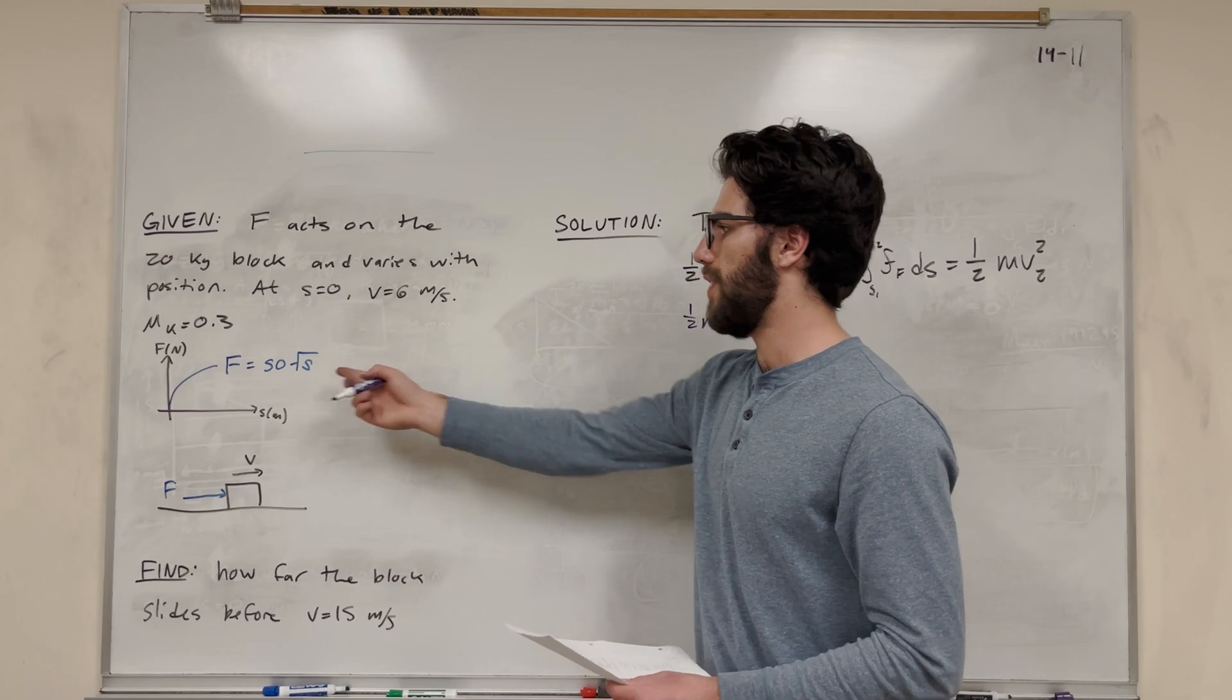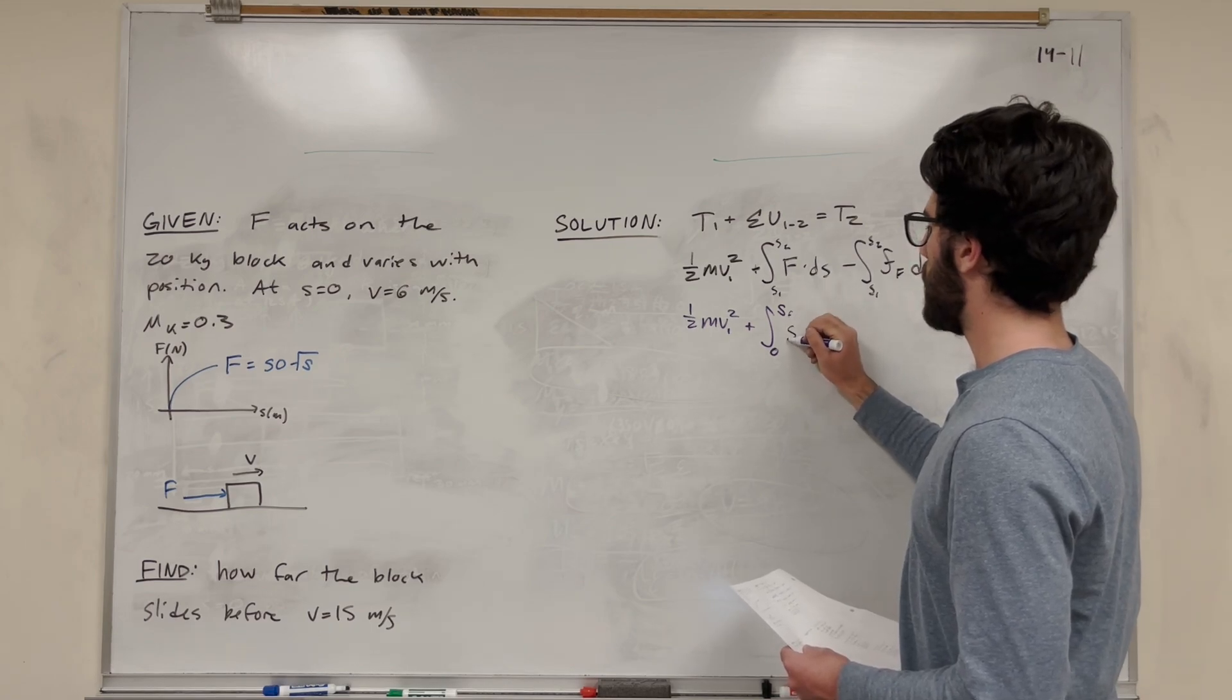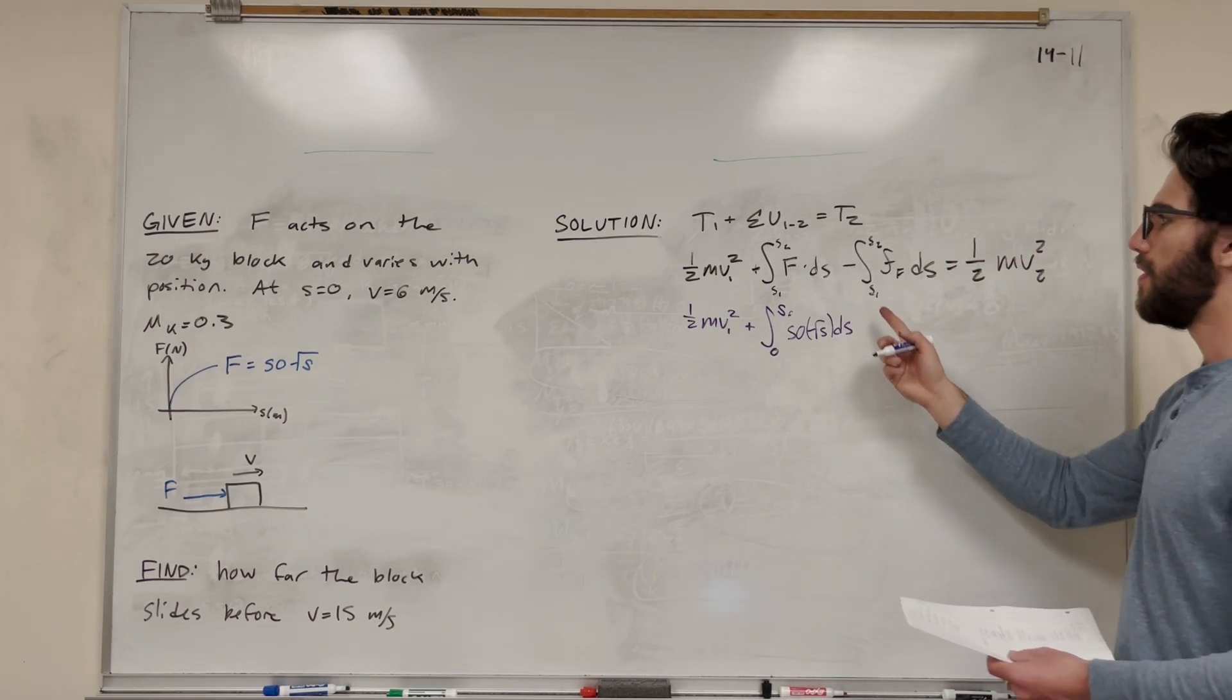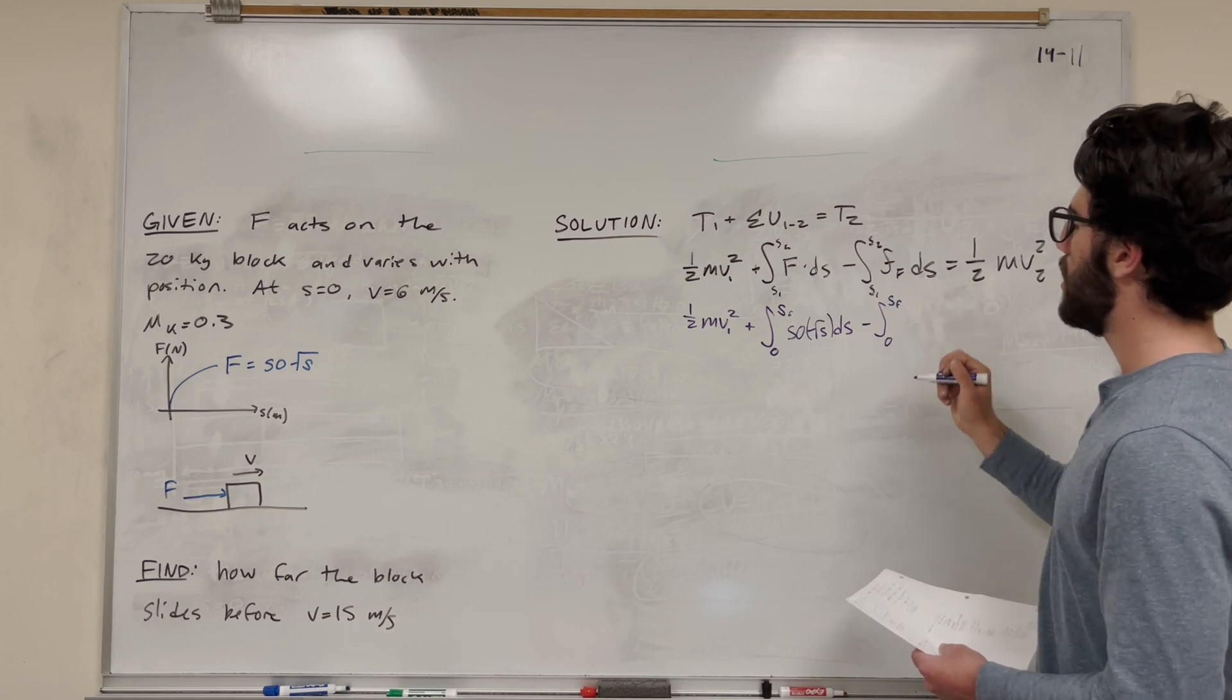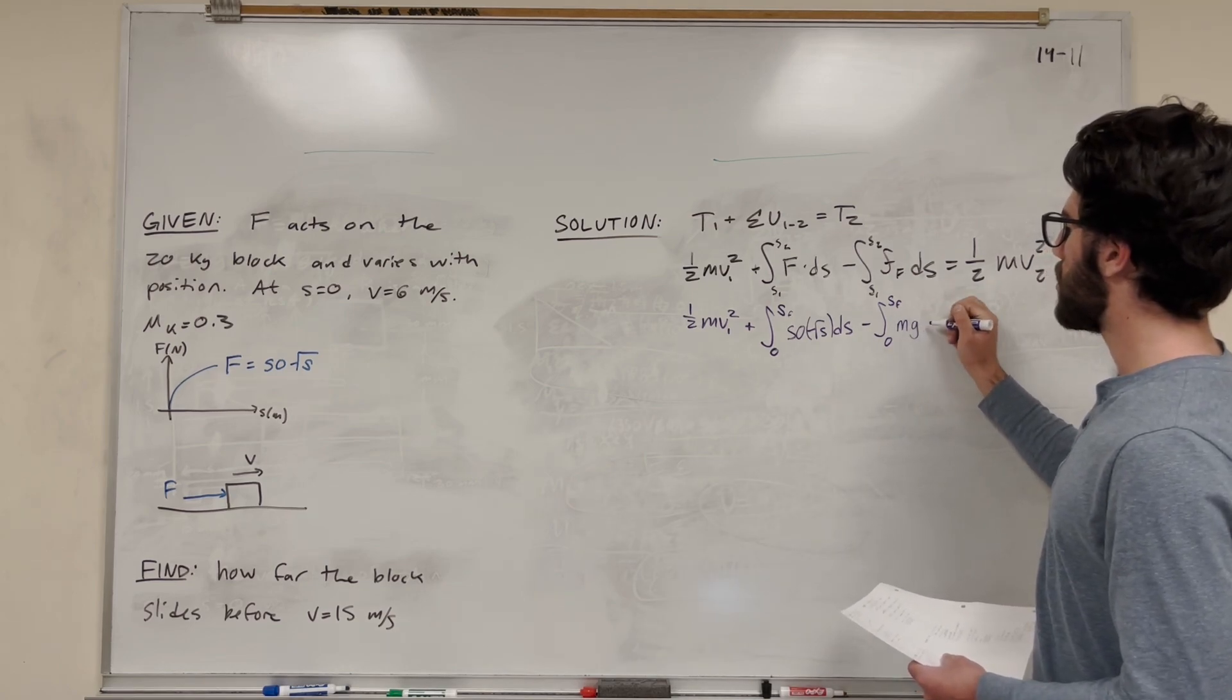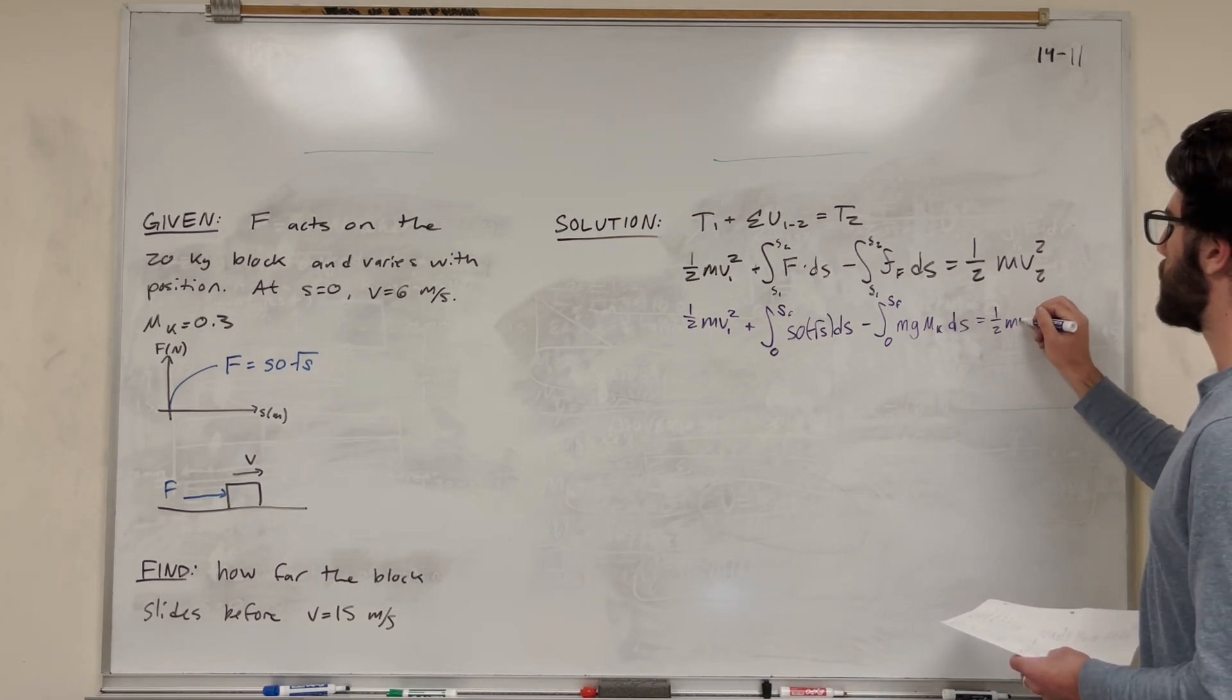Now the force we know is 50 square root of s. Let's label this s final just to not get it confused with the other s. This is going to be 50 square root of s ds. Now we have an integral here we're going to have to solve. With the friction, our bounds are going to be the same, zero to s final. Force of friction is normal coefficient of friction, and normal is mass times gravity. So force of friction can get replaced with mass, gravity, coefficient of kinetic friction, ds.